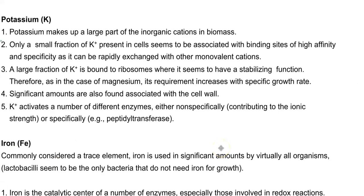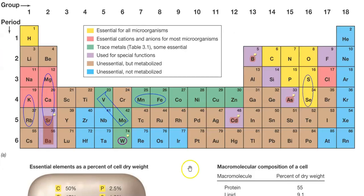The next element is potassium. It makes up a large part of inorganic cations in the biomass. Only a small fraction of potassium present in cells is associated with binding sites of high affinity and specificity of enzymes. Under some conditions, this specificity or affinity may be mediated by other monovalent cations also.